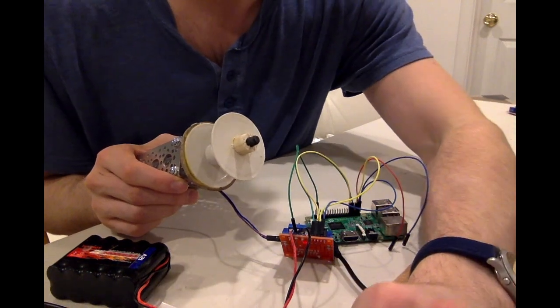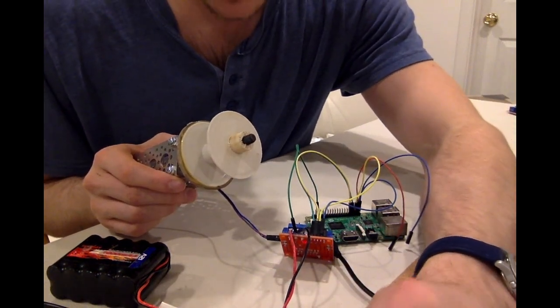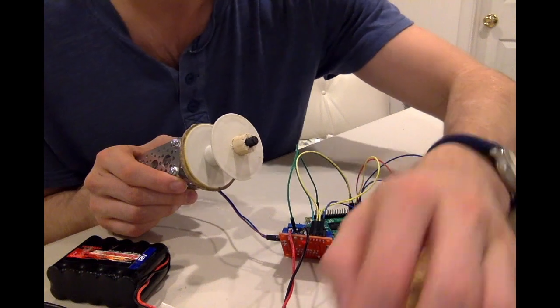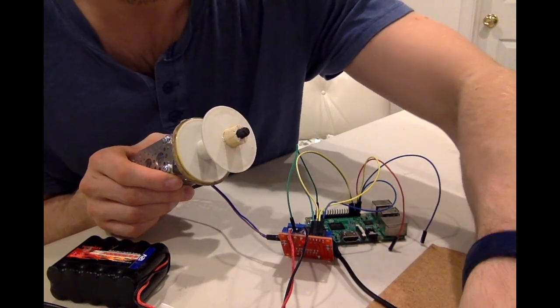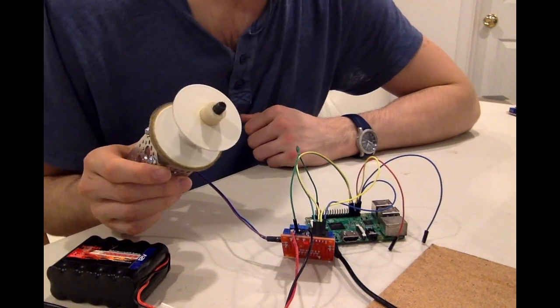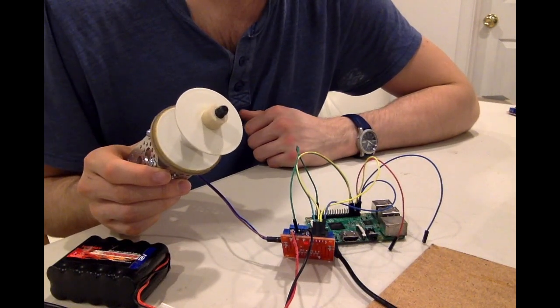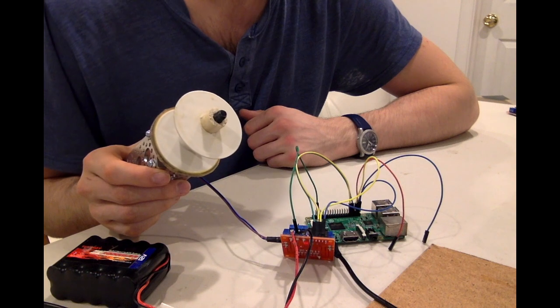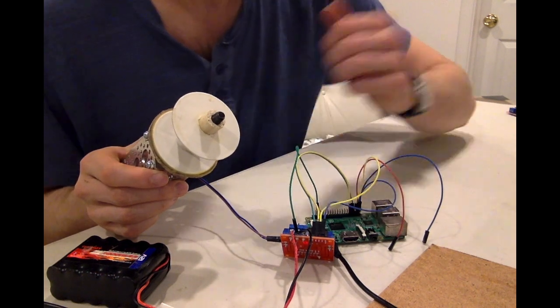Now I'm going to tell the Jarvis program to lower the screwdriver. When I hit enter the spool spools for five seconds. And now when I say raise screwdriver, it rotates the other way the same amount of time.